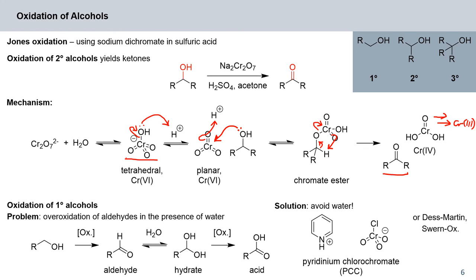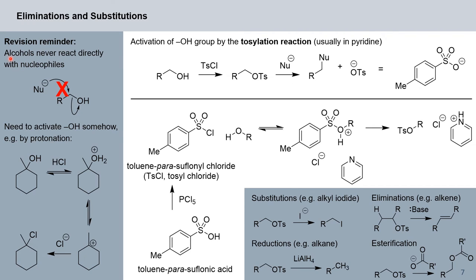As a revision reminder from Organic Chemistry 1: alcohols never react directly with nucleophiles — we need to activate the OH group somehow if we want it to leave. This can be achieved by protonation: we protonate the OH group and now have a very good leaving group. We can eliminate water and generate a planar carbocation, which can then be attacked by a nucleophile to give our desired product.